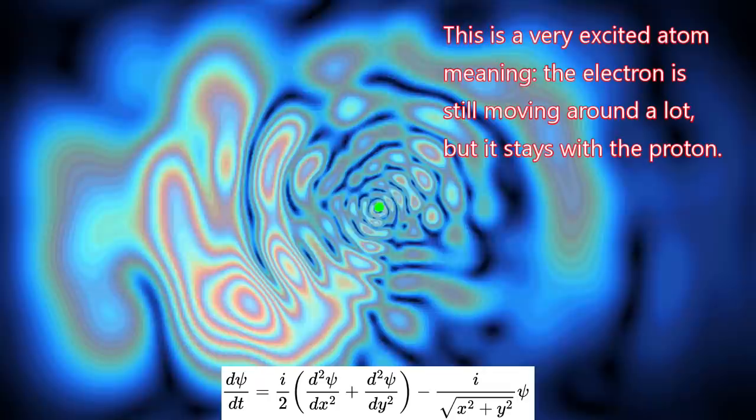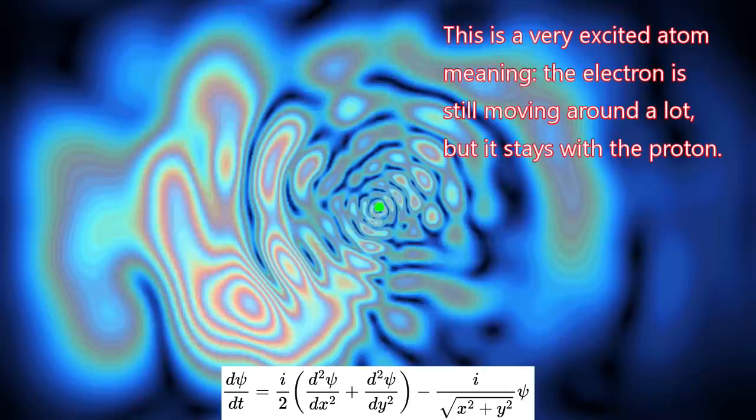This time, the electron stays around, and we have an atom. The electron is moving around the nucleus, but still very excited.